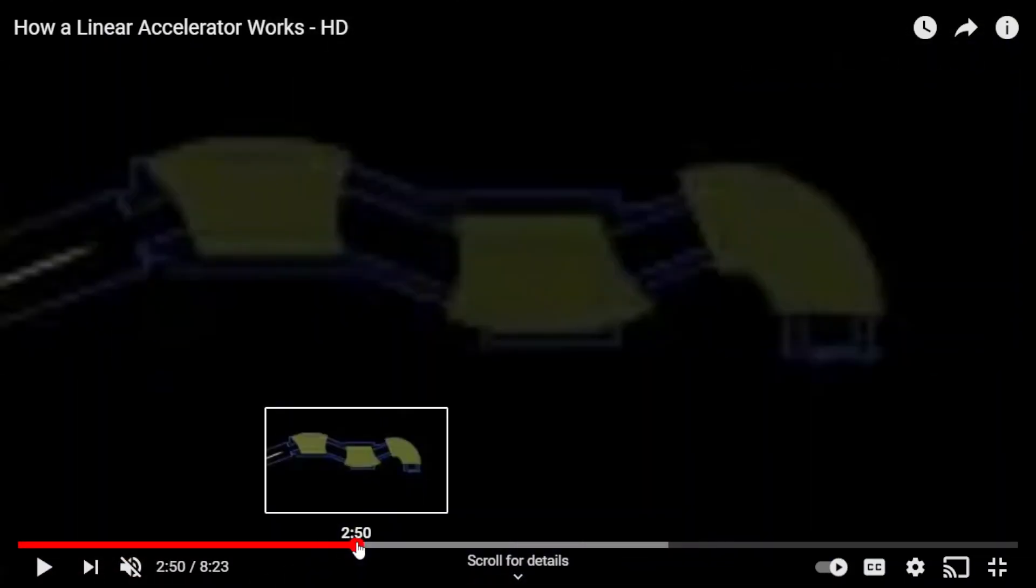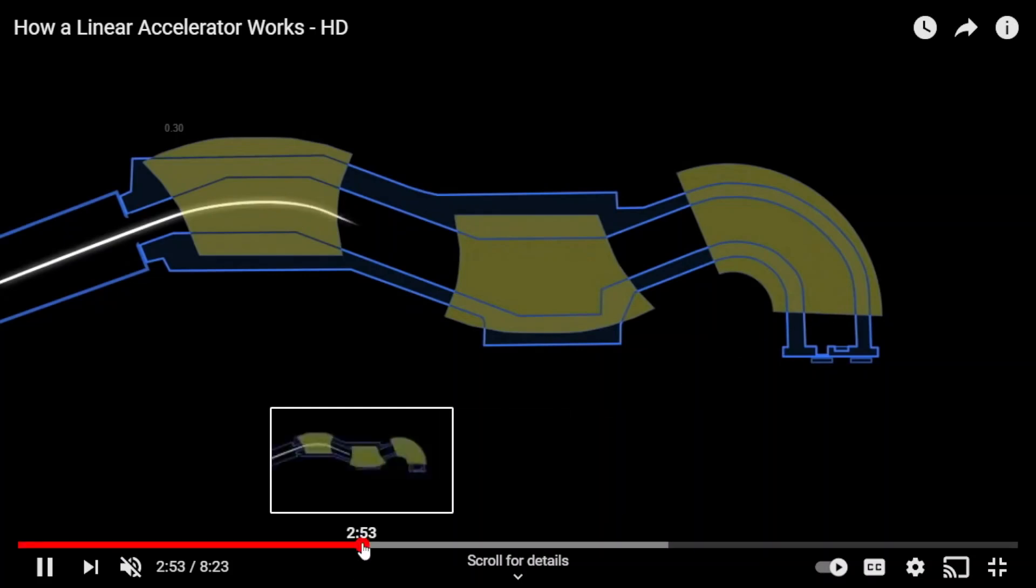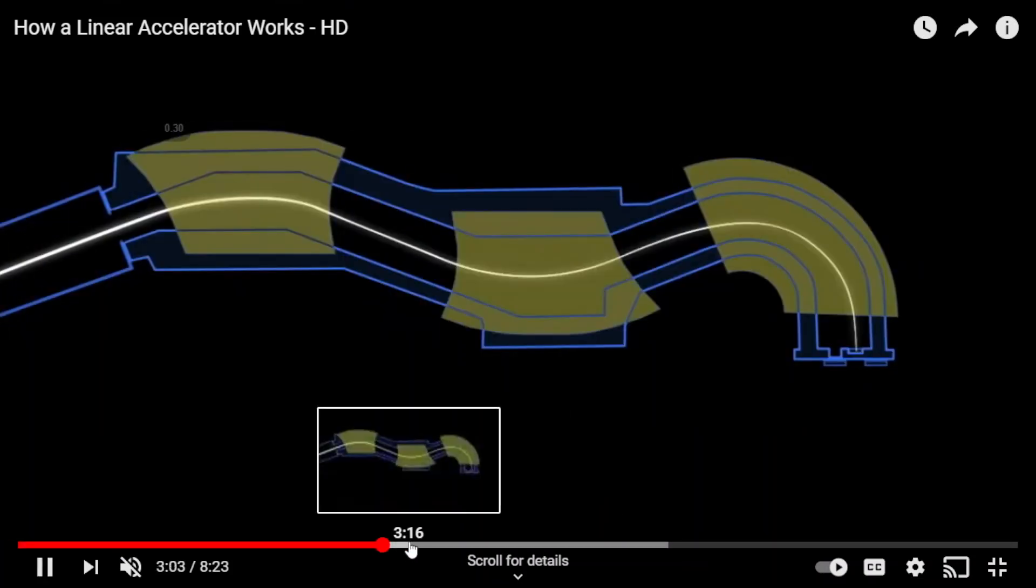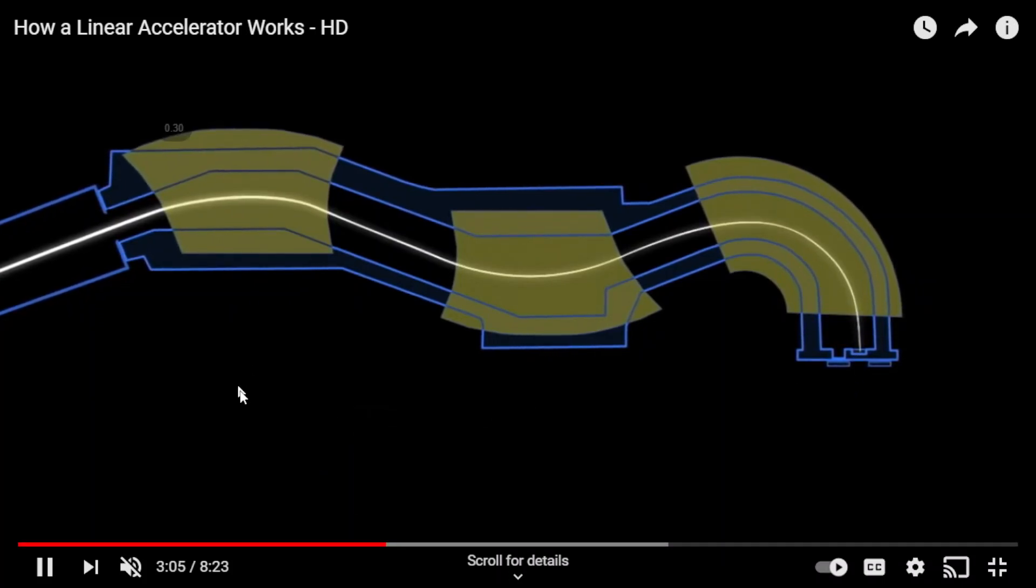As the electron leaves the accelerator tube, if the machine design has bending magnets, the electrons will go through them. The bending magnets will redirect the electron beam towards the target. Let me fast forward this, and you can see leaving the bending magnets here, and will hit the target after that.